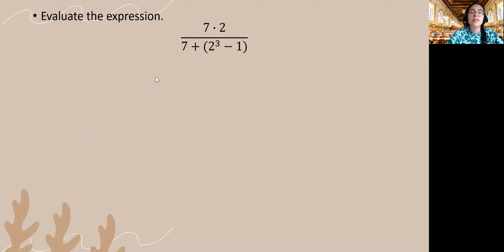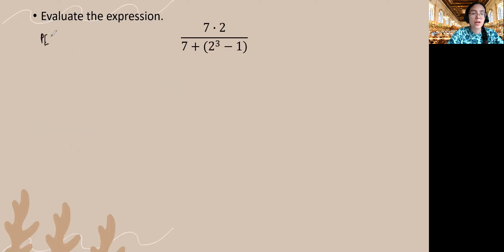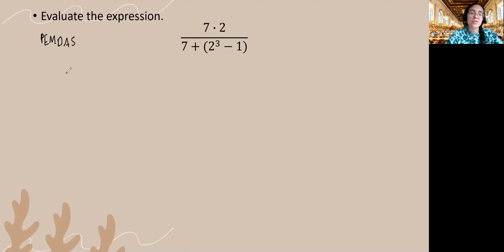Now we're asked to evaluate this expression — I really like fraction bars. We have multiplication in the numerator and a whole lot going on in the denominator. I'm going to write down my order of operations off to the side, and I encourage you to do that as well. I have multiplication in the numerator and addition, a power, and subtraction in the denominator. I'm going to start in the numerator: 7 times 2 is 14.